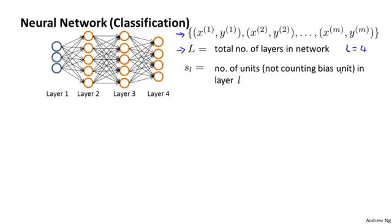And I'm going to use S subscript L to denote the number of units, that is the number of neurons not counting the bias unit in layer L of the network. So for example, we would have S_1 which is input layer equals 3 units, S_2 in my example has 5 units, and the output layer S_4 which is also equal to S_L because capital L equals 4. The output layer in my example on the left has 4 units.